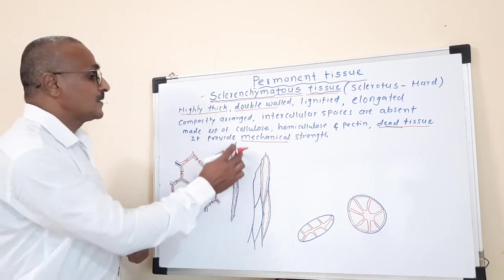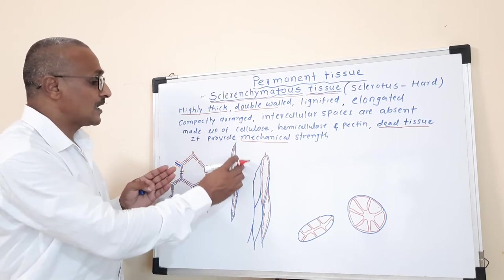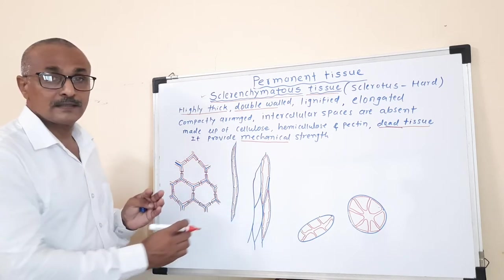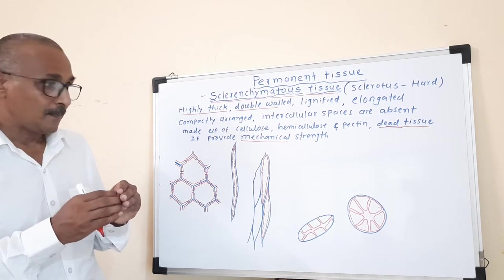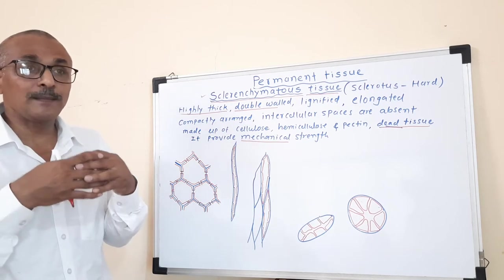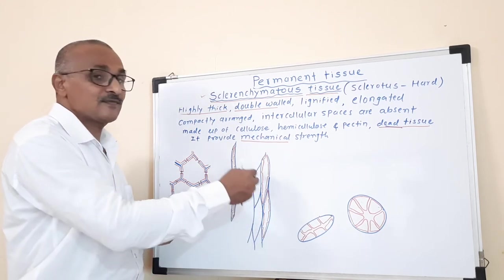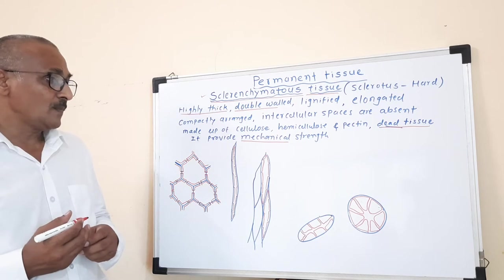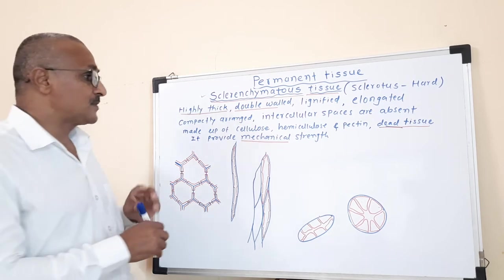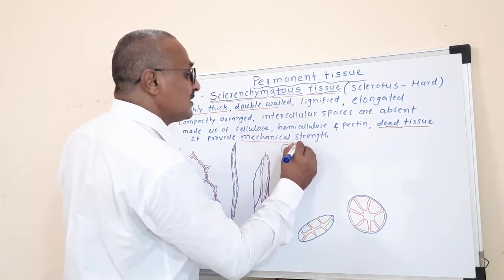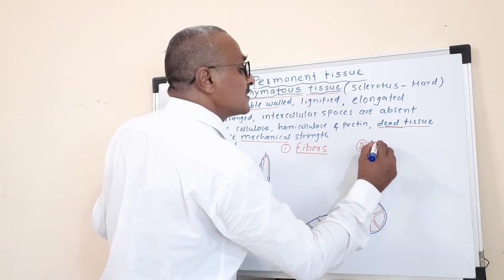If we see the cross-sectional view, the sclerenchymatous cells are elongated, and the lateral view shows the whole fiber. When arranged in tissues, they interlock with each other, ultimately giving mechanical strength to the plant. Sclerenchyma is classified into two types: one is fibers and the other is scleroids.